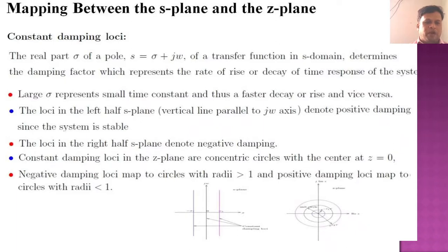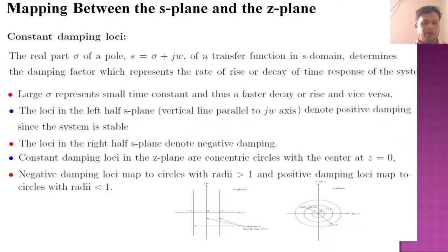The loci in the right half of the s-plane denote negative damping. The constant damping loci in the z-plane are concentric circles with center at z equal to 0. The negative damping loci map to circles with radii greater than 1, and positive damping loci map to circles with radii less than 1. So if the radius is less than 1 it is positive damping, and if radii is greater than 1 it is negative damping corresponding to the right half of the s-plane.